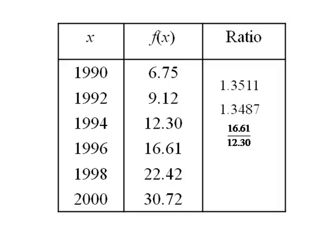16.61 over 12.30, which is 1.3504. Notice, it's always the later output divided by the previous output. That's what it means to divide successive outputs.